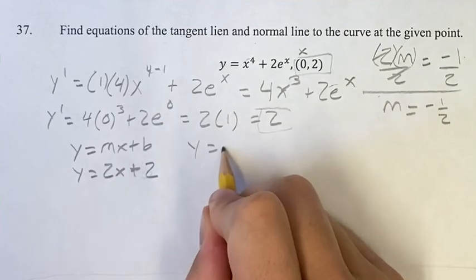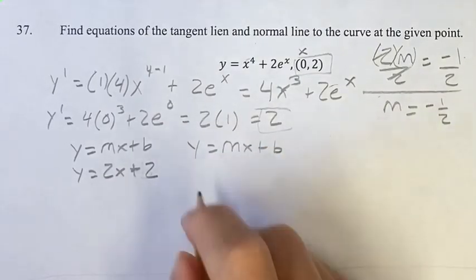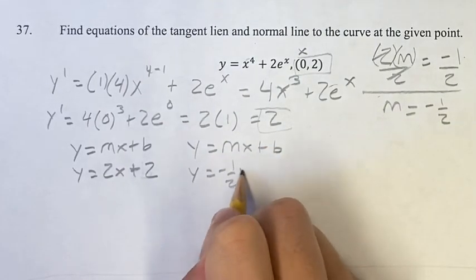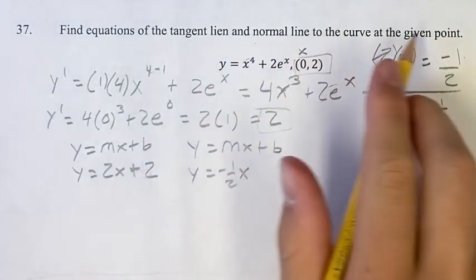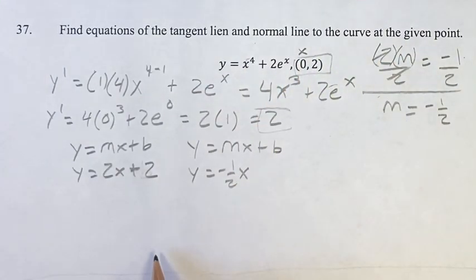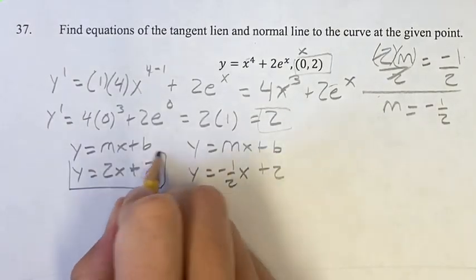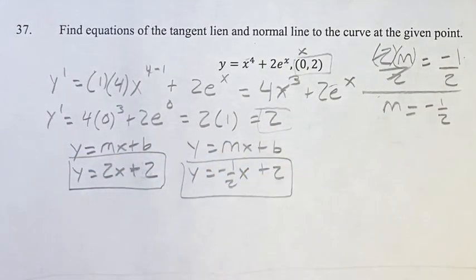So now we can do it again. y equals mx plus b. y equals negative 1 half x. And again, the normal line at the given point means it goes through the given point, which means this is the y-intercept also of this one. So this is the equation of the tangent line. This is the equation of the normal line.